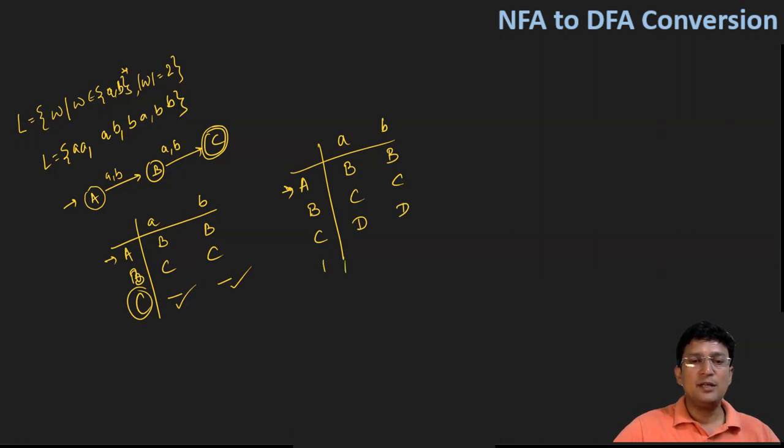And now the new state is the dead state D. And in the dead state with the A and the B symbol, you will move to the dead state itself. So this also you can take up as the thumb rule that if the transitions are not defined, then you can take as one of the states at the dead state D. And from the dead state on any other input alphabet, you should remain at the dead state.